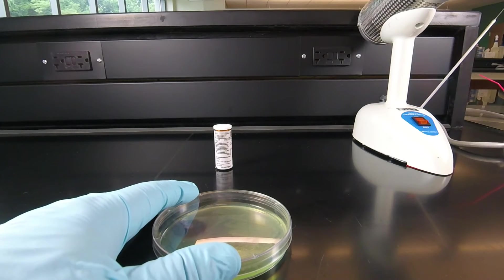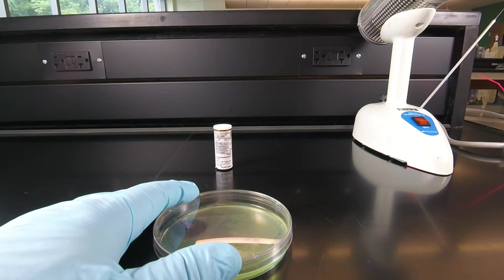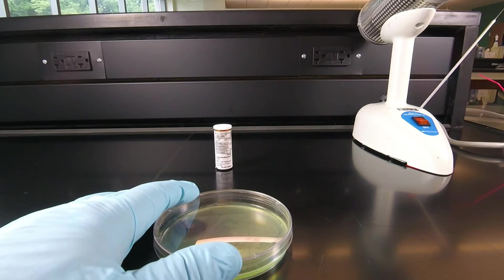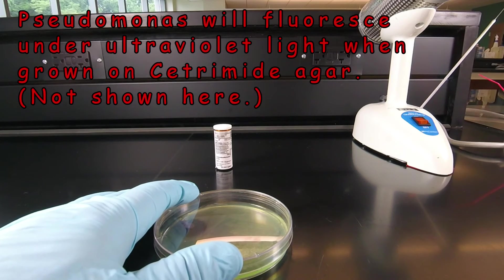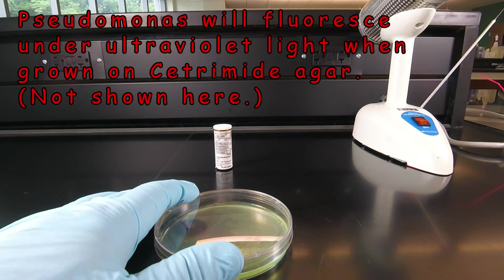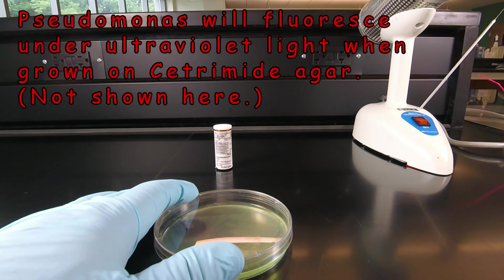There are a couple of other tests we could do to help confirm that this is Pseudomonas aeruginosa. One of the other things that cetramide agar does is it stimulates Pseudomonas to produce fluorescent compounds that fluoresce under ultraviolet light. So we could take low-energy ultraviolet light and expose the plate to that in a darkened room, and we would see the bacteria fluorescing.